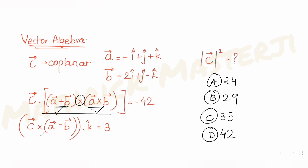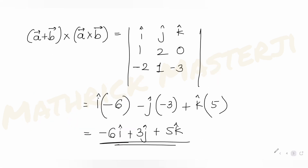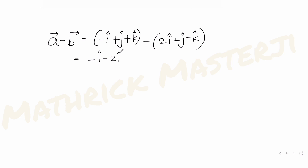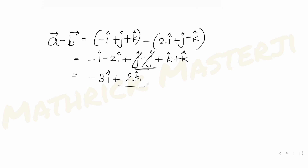For the third condition — (c cross (a minus b)) dot k-cap equals 3 — let's first find a minus b. Vector a minus vector b: (−i+j+k) minus (2i+j−k) gives minus 3i plus 0j plus 2k.